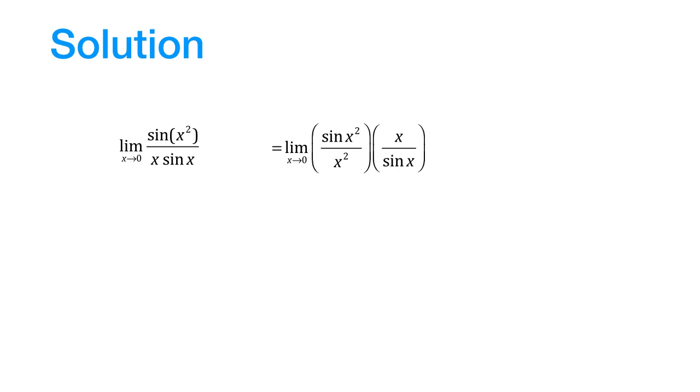Now this limit can be split into the product of the following two limits. Now each limit here is a standard form. We know that the limit of sin x by x as x tends to 0 is equal to 1.